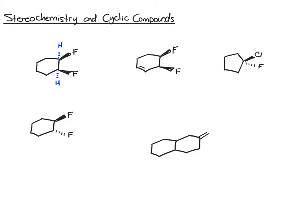To determine whether these are chiral centers, look to see if there are four different groups around the carbon. For this first carbon: one group is the fluorine, second is the hydrogen, third is a CH2, and the fourth is a CH with a fluorine attached — so four different groups, marking it a chiral center. The same logic applies to the bottom carbon. However, there is a plane of symmetry that cuts this molecule in half, so it is achiral — it's a meso compound.